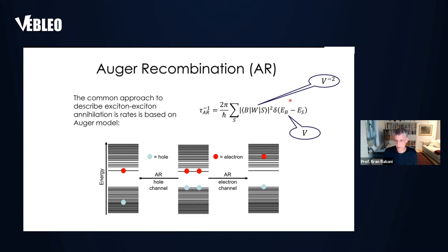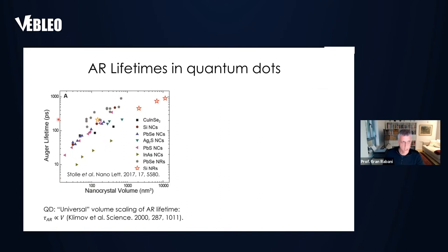Of course, this is counterproductive because when we go to the nanoscale we'd like to confine the particles. We'd like a different way to make the Auger lifetime very long so we can collect the light before exciton-exciton annihilation takes place, without going to bigger particles. If you look at the experimental situation — from this Nano Letters paper and a review by Klimov in Science 2000 about Auger recombination — the experimental claim is that, at least for quantum dots, the Auger lifetime should scale linearly with the volume.